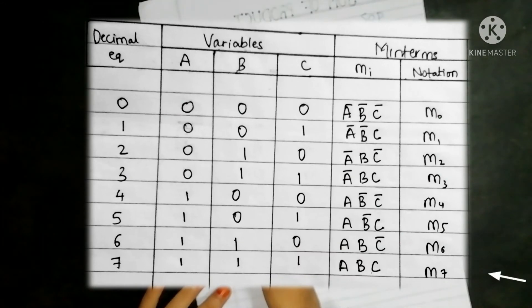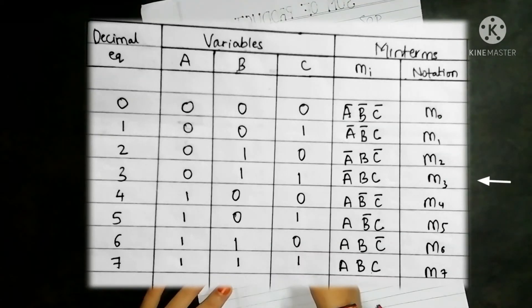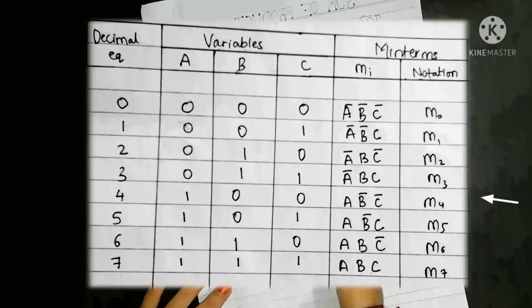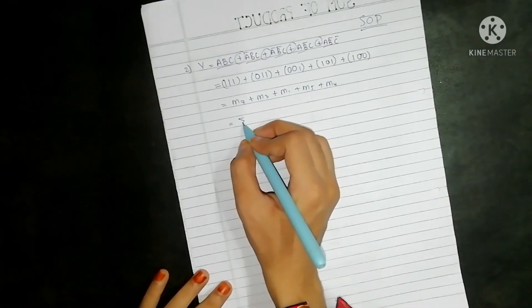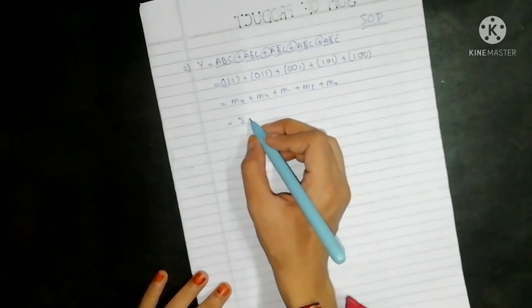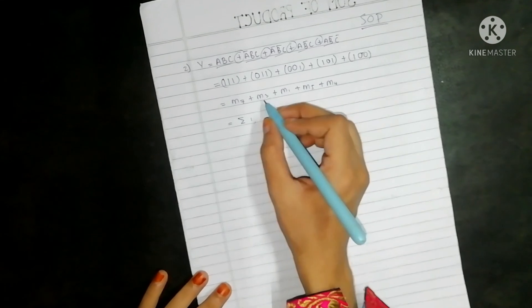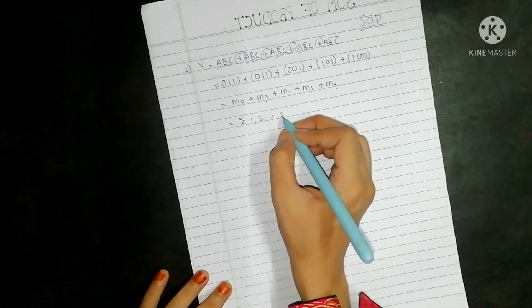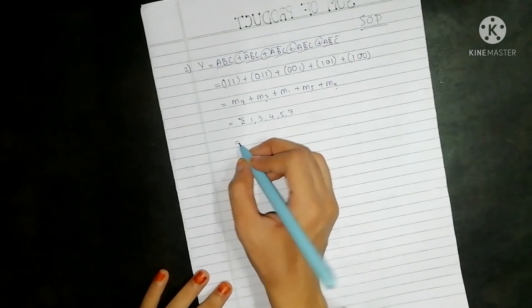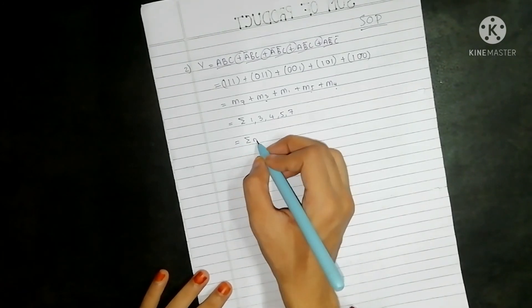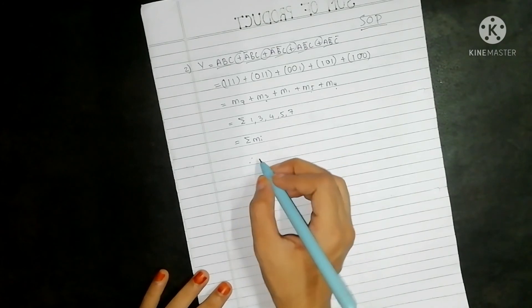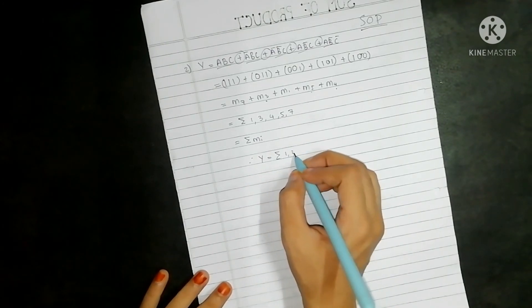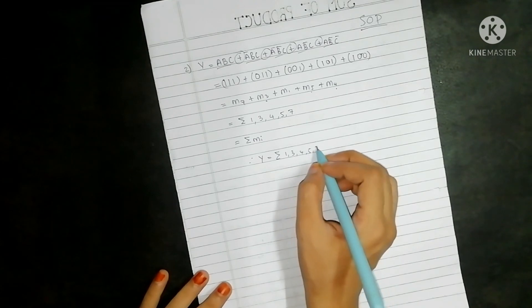Since 1 1 1 is for m7, 0 1 1 is for m3, 0 0 1 is m1, 1 0 1 is m5, 1 0 0 is m4. This can be written as sum of, write down in order: 1, 3, 4, 5, and then 7. This can also be written as sum of mi, or y equals summation of 1, 3, 4, 5, 7.